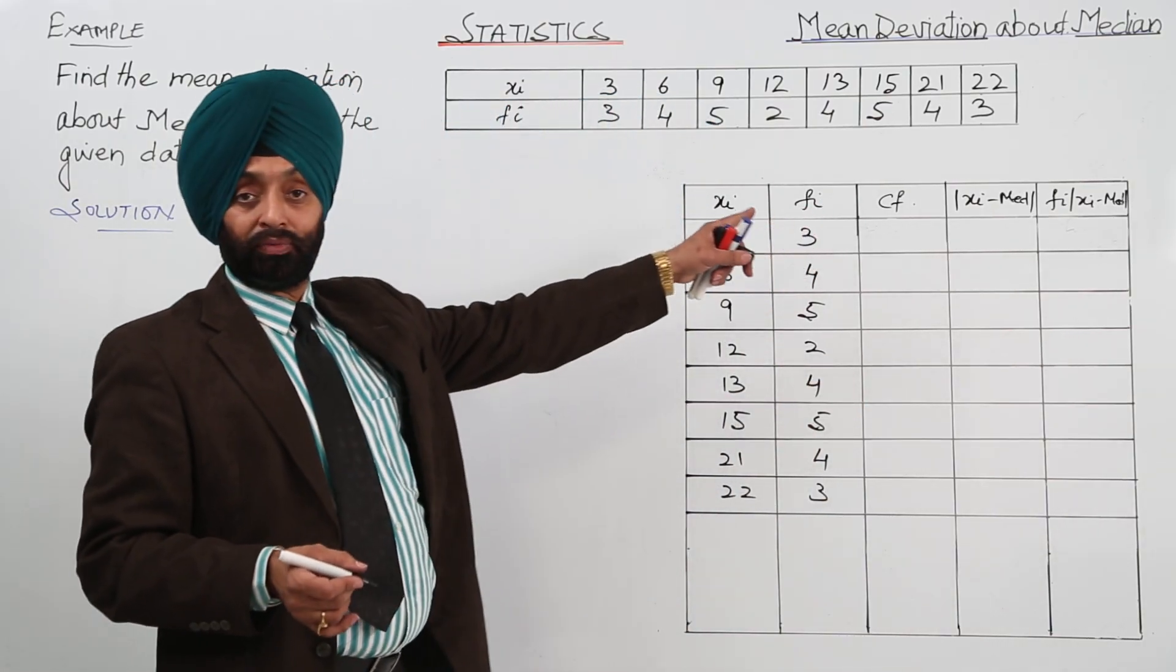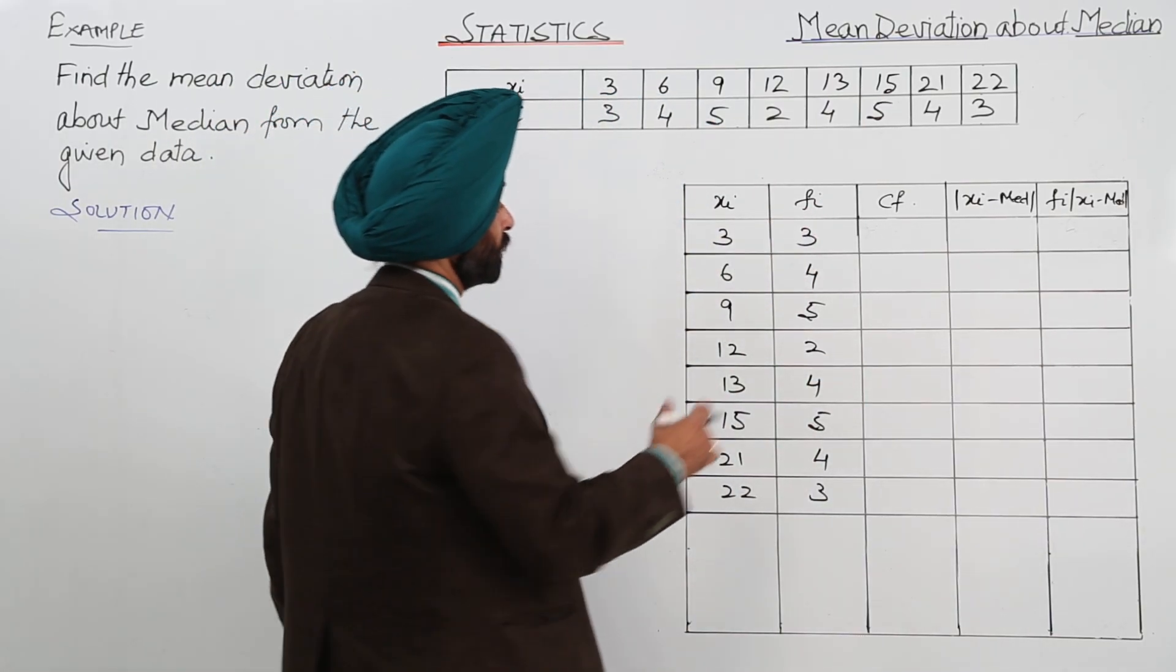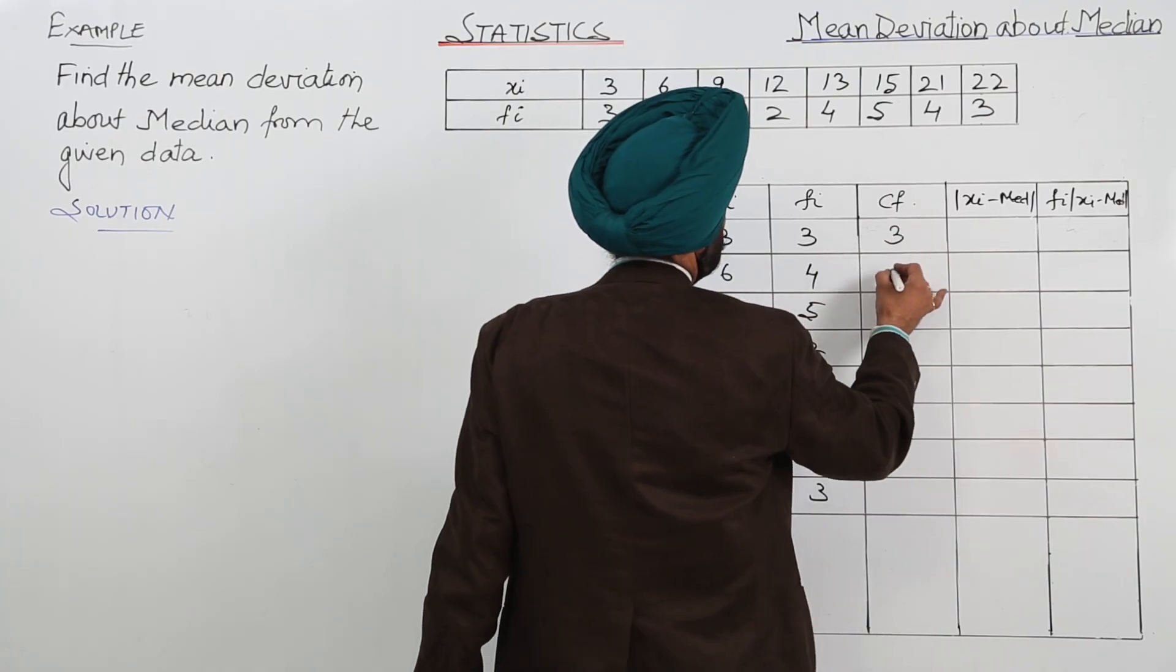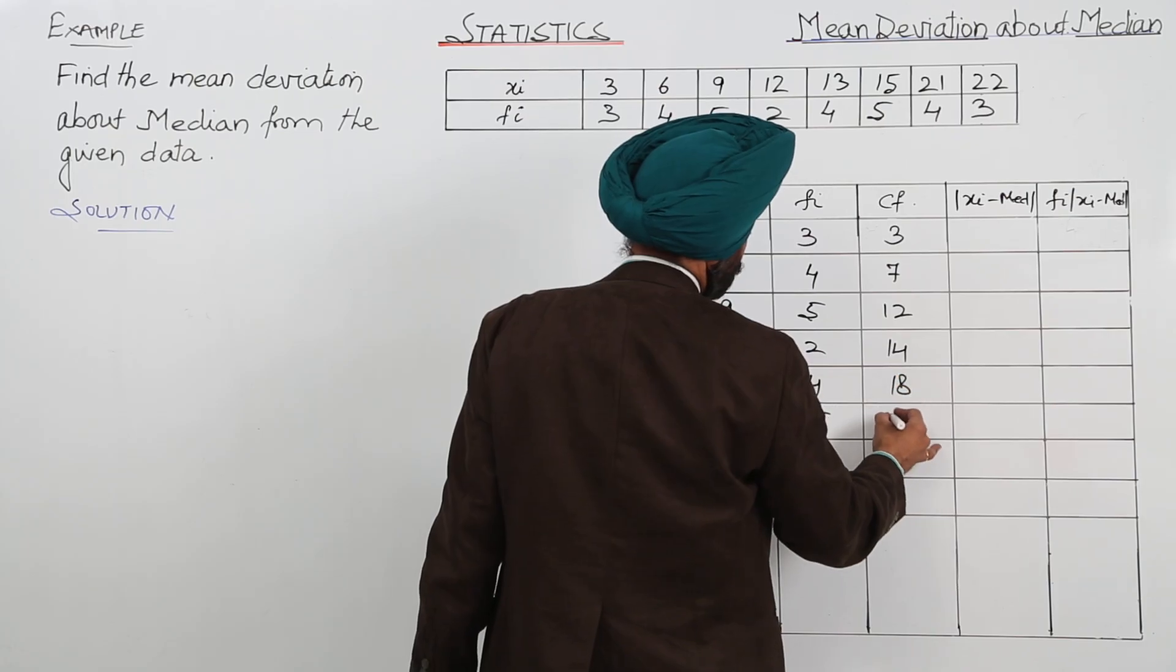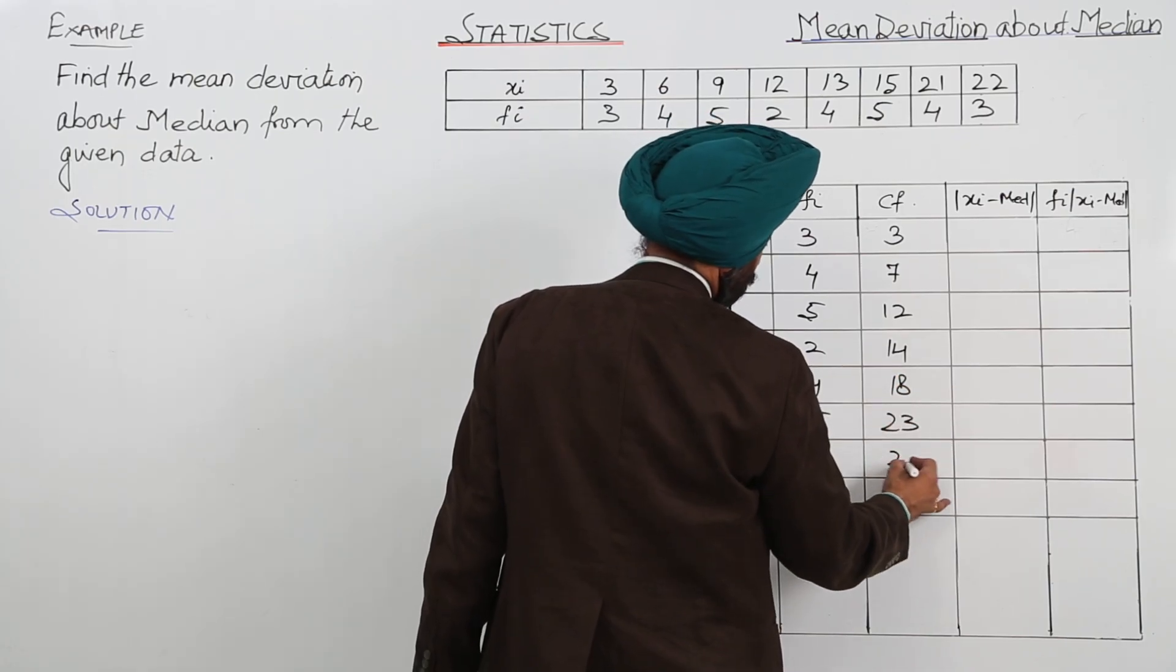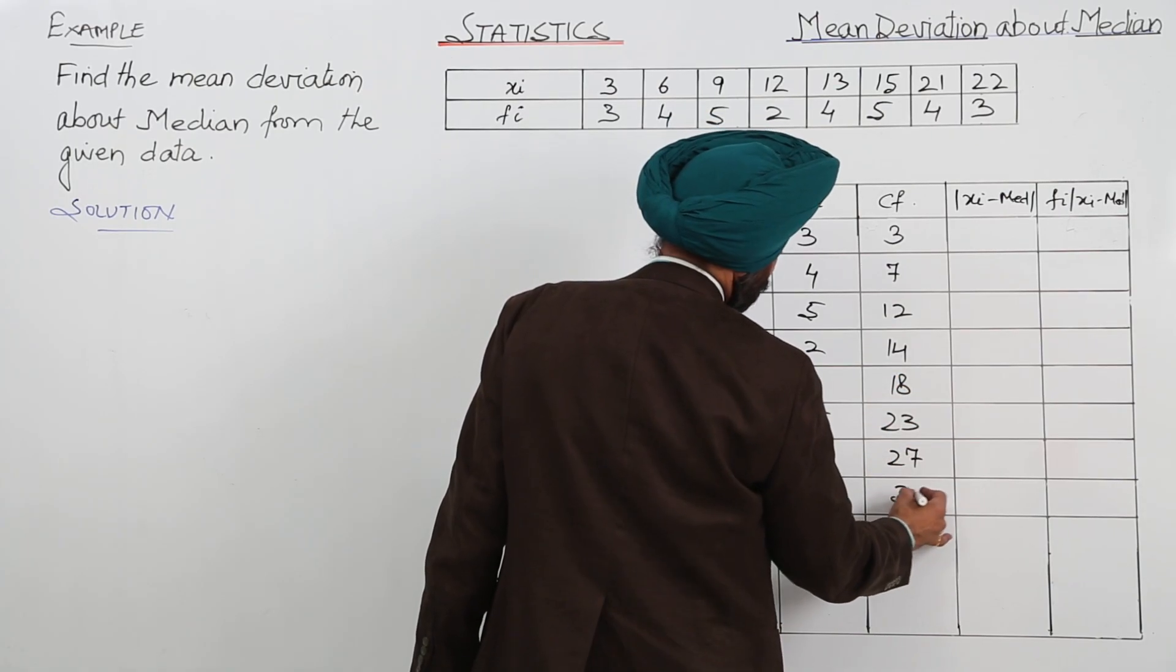Now I have mentioned here CF. That is the cumulative frequency. So 3, then 7, 12, 14, 18, 23, 27 and 30.